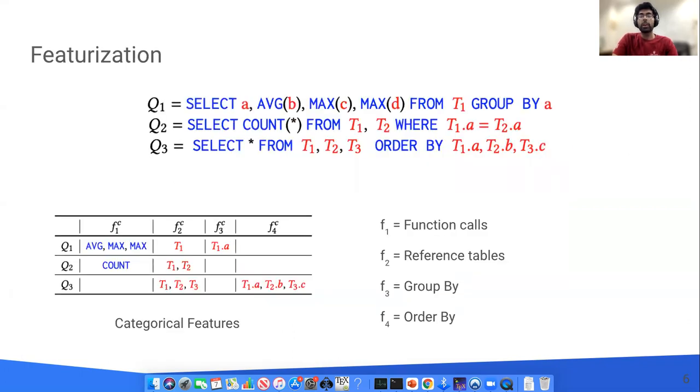Let me now show you some concrete examples of features that we extract. We define two types of features. The first is known as categorical features. These are features that are derived from the SQL text of the query by parsing it. For instance, for the three queries shown here, we extract four categorical features such as function calls, group by attributes, order by attributes, etc. For each query, the table on the left shows the extracted feature values. For example, for function call feature, we can see that q1 contains average and max, q2 contains account start, and q3 contains no function calls.